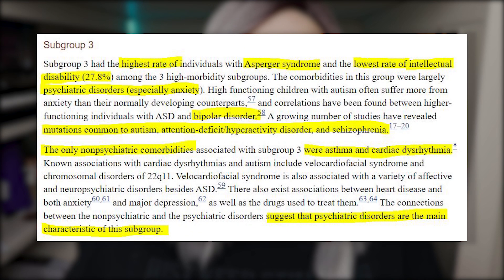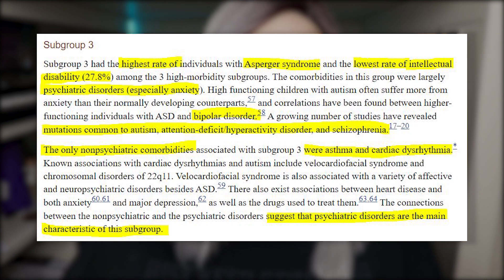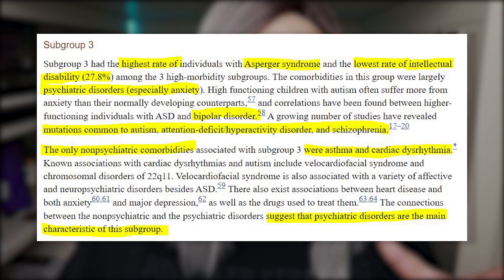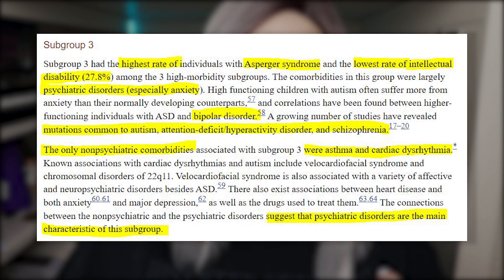Subgroup three found the highest rate of Asperger's syndrome, the lowest rate of intellectual disability at 28 percent, and the comorbid conditions were highly psychiatric, especially anxiety. They noted research correlation between ASD and bipolar disorder, and studies finding mutations related to autism, ADHD, and schizophrenia. The only non-psychiatric conditions found in this subgroup were asthma and cardiac dysrhythmia, leaving psychiatric disorders as the main characteristic of this particular subgroup.